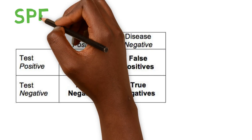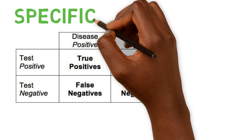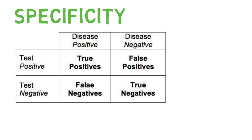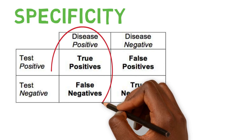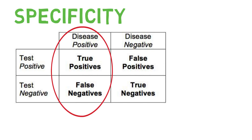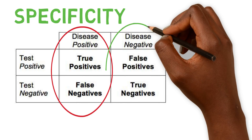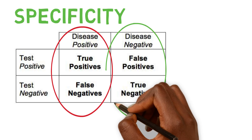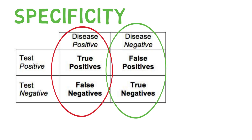For specificity, you do another circle in the right-hand column. You take the true negative — true is always on top — divided by true negative plus false positive.